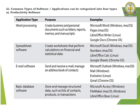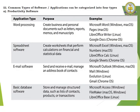Common types of software applications can be categorized into four types. First, productivity software. In word processing, the purpose is to create business and personal documents such as letters, reports, memos, and manuscripts. Examples are Microsoft Word, LibreOffice Writer, and Google Docs. Spreadsheet software creates worksheets that perform calculations on financial and statistical data. Examples are Microsoft Excel, LibreOffice Numbers, and Google Sheets. Email software is used to send and receive emails and manage an address book of contacts. Examples include Microsoft Outlook, Gmail, and Evolution.